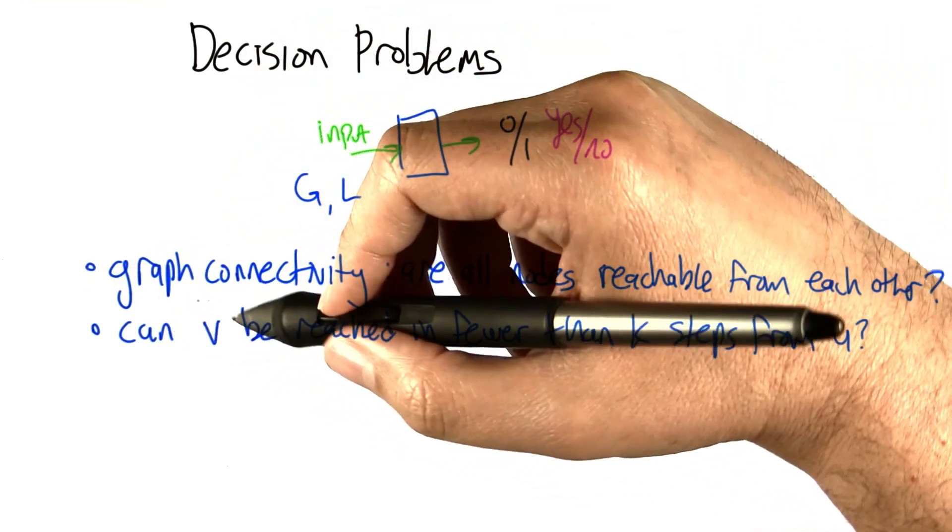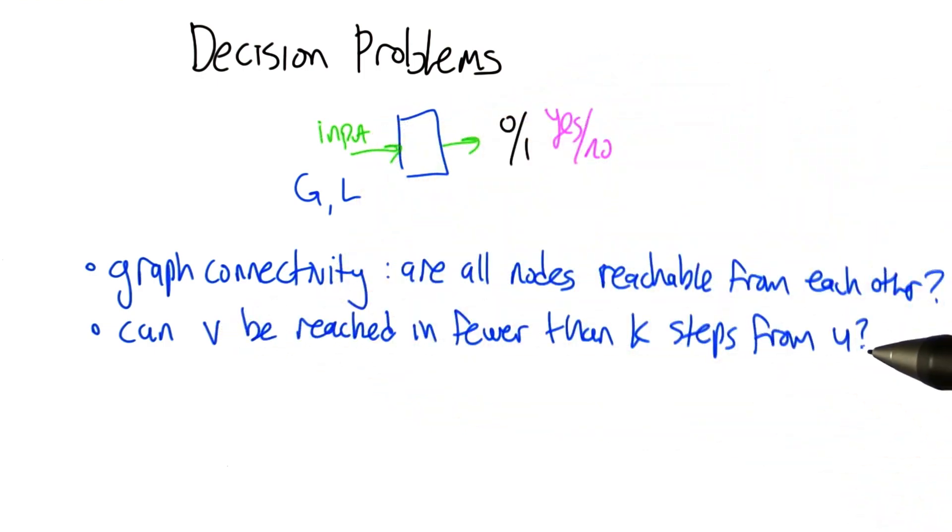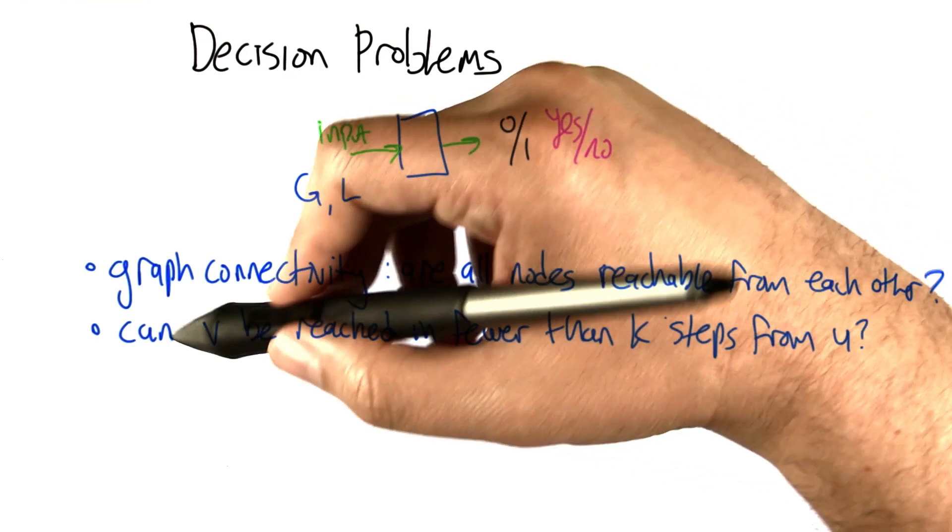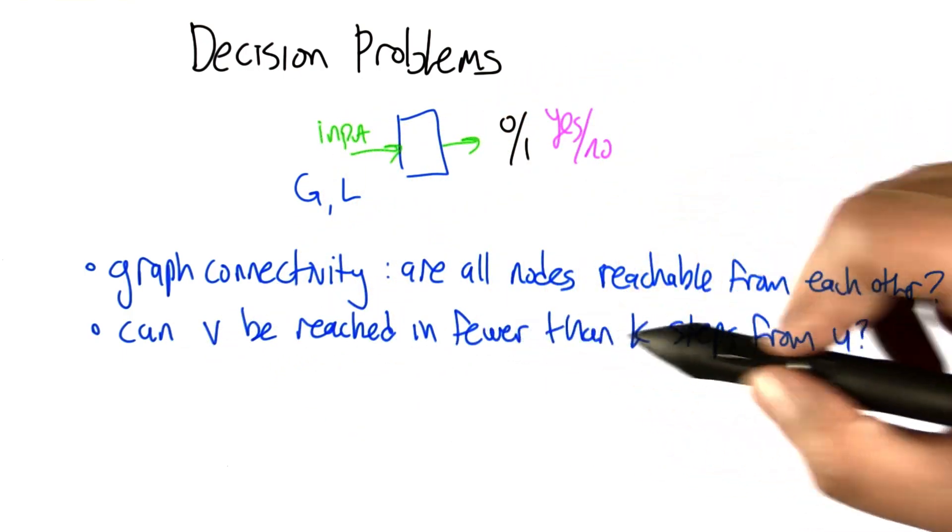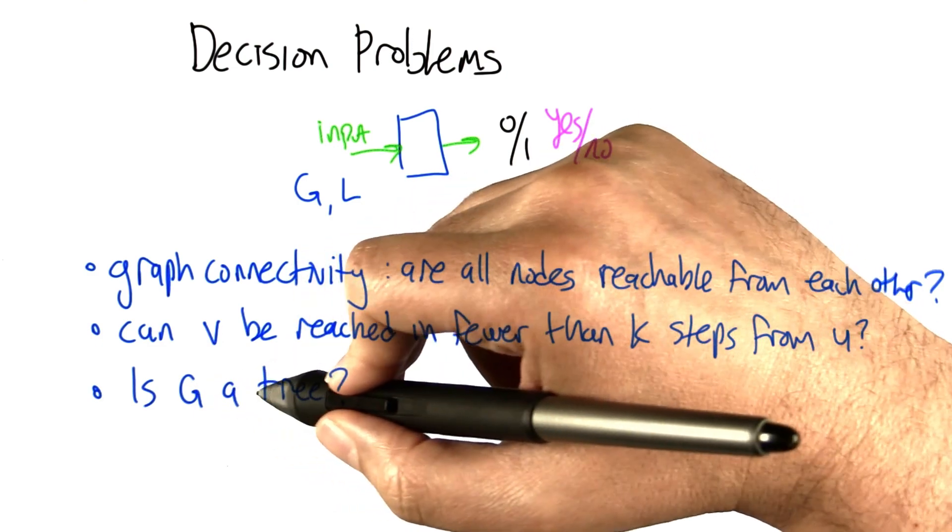Here's another example: if I give you a graph and a node v and a node u and a number k, those are the inputs, the question is, can v be reached in fewer than k steps from u? Another question is, given a graph, is it a tree, yes or no?